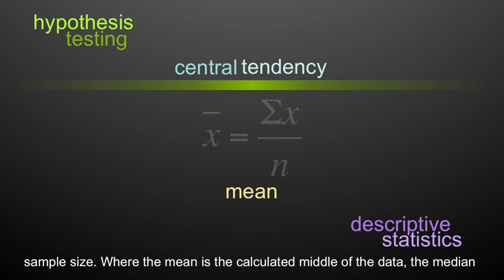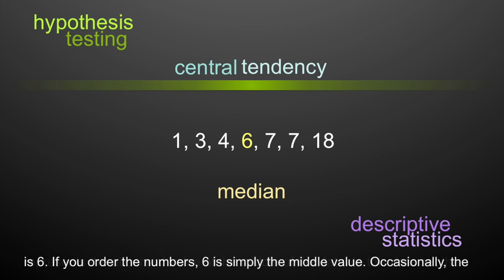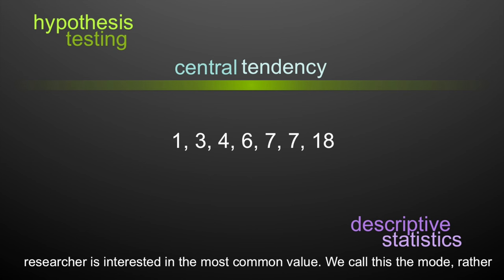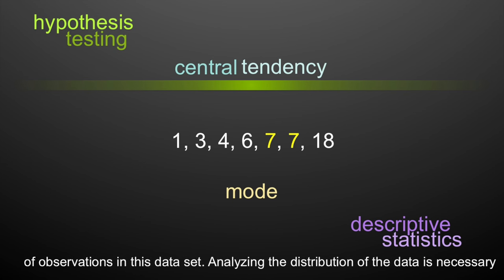Where the mean is the calculated middle of the data, the median represents the observed value of the middle of the data. For example, in this dataset the median is 6 — if you order the numbers, 6 is simply the middle value. Occasionally a researcher is interested in the most common value; we call this the mode. In our dataset, the mode is 7 — it has the most observations in this dataset.